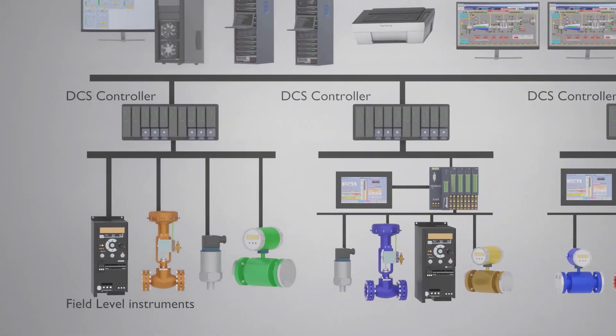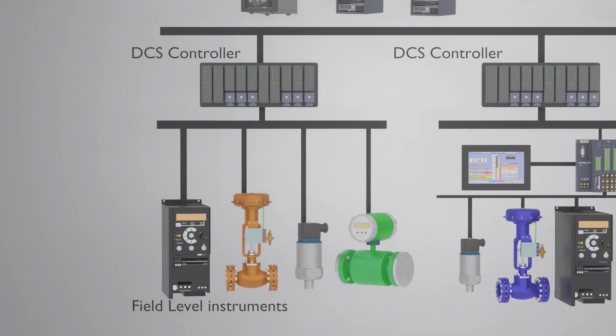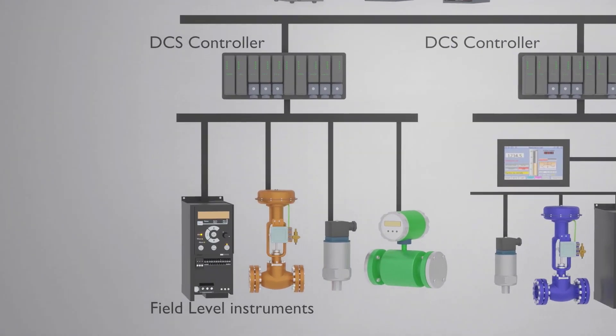In another area — area C — we have different field instruments: control valves, transmitters, and VFDs. All these field instruments are going to be connected to your DCS controller.